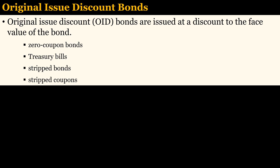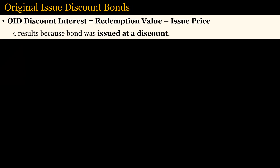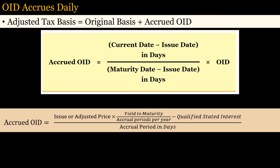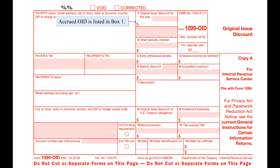Original issue discount bonds are bonds issued at a discount to the face value of the bond, such as zero coupon bonds and treasury bills. The OID discount is treated as interest. The total OID interest equals the redemption value minus the issue price. No OID interest is reported for most tax-exempt securities, United States savings bonds, and short-term debt securities with terms not exceeding one year from date of issuance. OID accrues every day and is added to the adjusted tax basis of the bond. This accrued OID is taxed annually as interest. The total accrued OID can be approximated using the first formula, but the more complicated constant yield method is used for actual calculations. You do not need to figure this yourself since your broker will list the accrued OID in Form 1099-OID that you will receive after the end of the tax year.